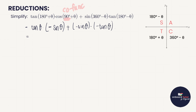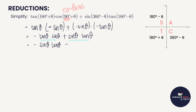Sin(360° − θ) is in quadrant four where sine is negative, giving −sin θ. Tan(180° − θ) is quadrant two where tan is negative, giving −tan θ. So the expression becomes: tan θ · (−sin θ) + (−sin θ)(−tan θ). Dealing with signs: the first term is −tan θ sin θ and the second is +sin θ tan θ. These are like terms that cancel, giving a final answer of zero.